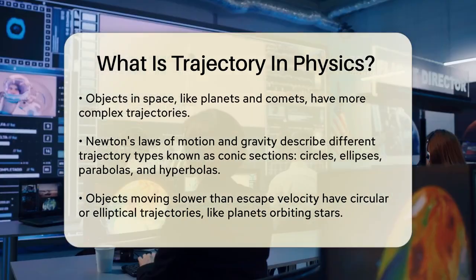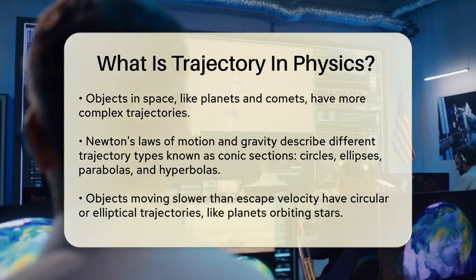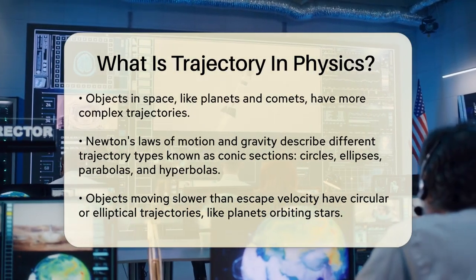If an object is moving at a speed less than the escape velocity of a celestial body, its trajectory will be a circle or an ellipse. This is why planets orbit around stars in elliptical paths.